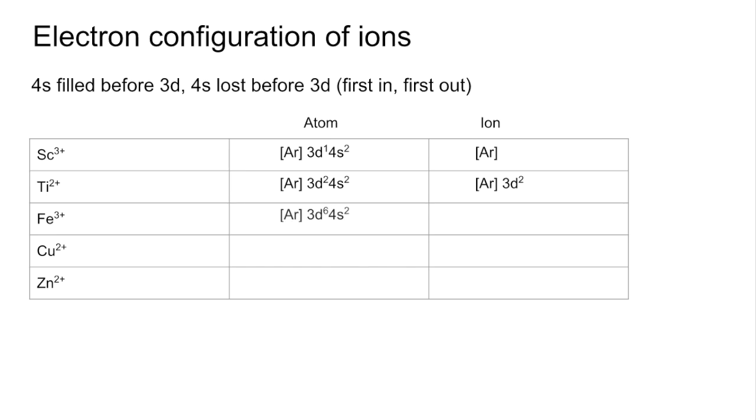Iron 3 plus, there's the atom, there's the ion. Copper 2 plus, remember that's one of the dodgy ones, 3D10 4S1. We lose the 4S1, then one of the 3D10s so we get to 3D9. Zinc 2 plus has that full configuration, 3D10 4S2. We're going to lose these two so we get to 3D10.